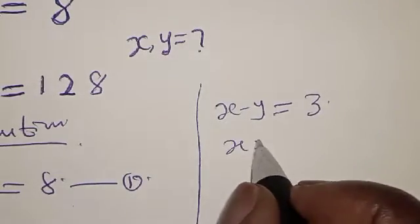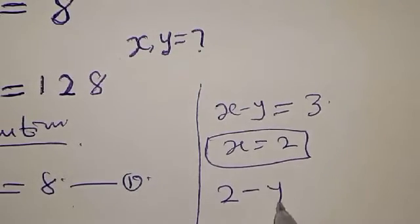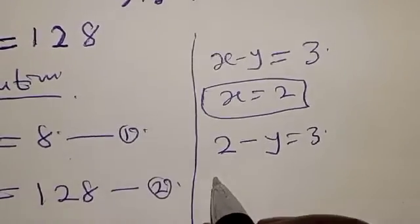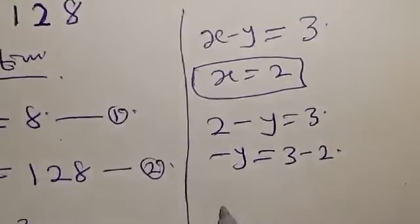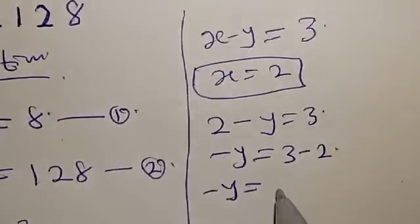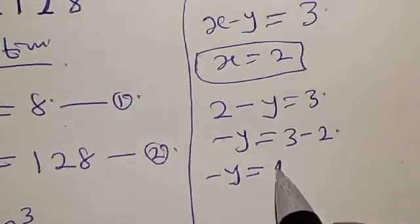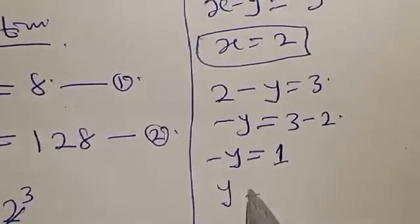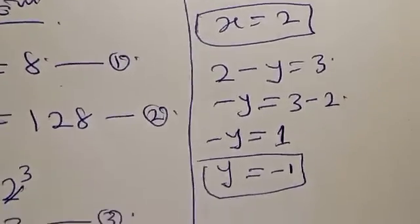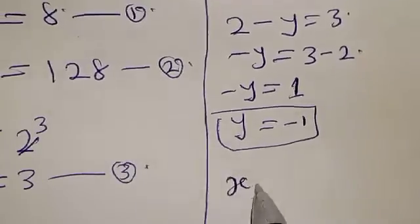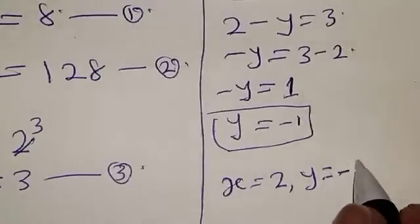Equation 3 is x minus y equal to 3. Substituting x equals 2, we have 2 minus y equal to 3. Therefore, minus y equals 3 minus 2, which is 1. Therefore, y is equal to minus 1. Our final answer is x equal to 2 and y equal to minus 1.